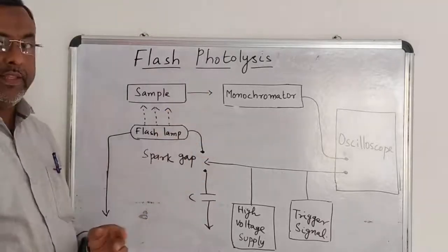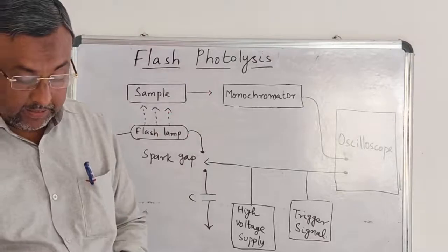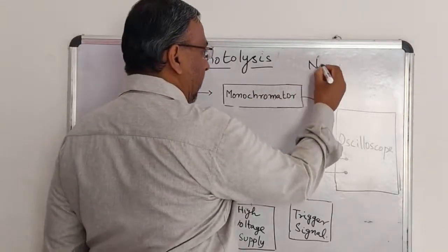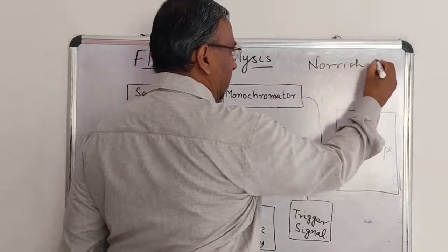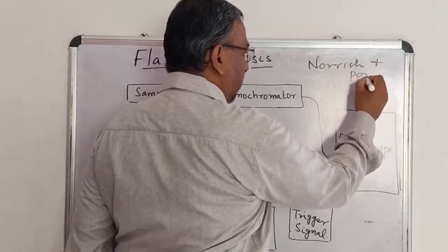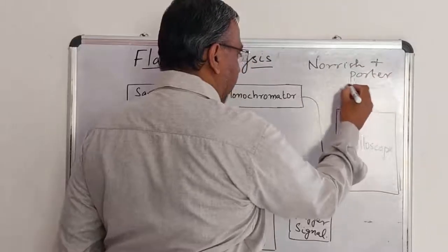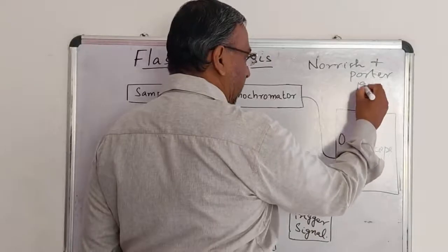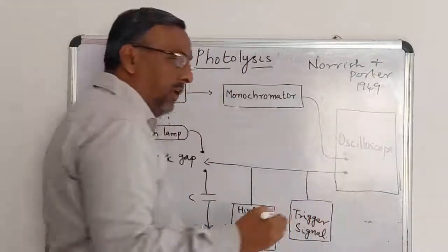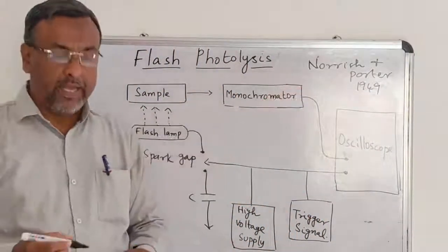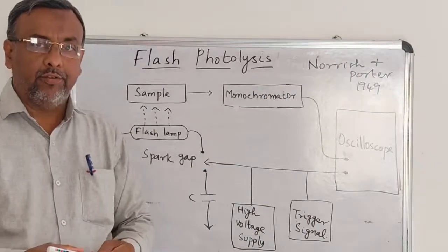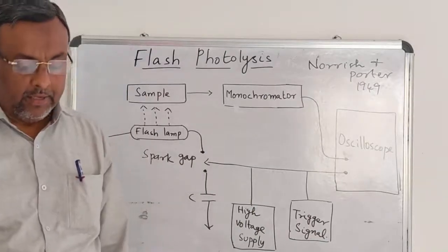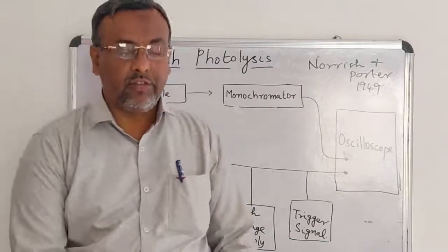This method was first introduced by Norrish and Porter in 1945. In 1999, Norrish and Porter introduced this flash photolysis method of studying the kinetics of fast reaction.